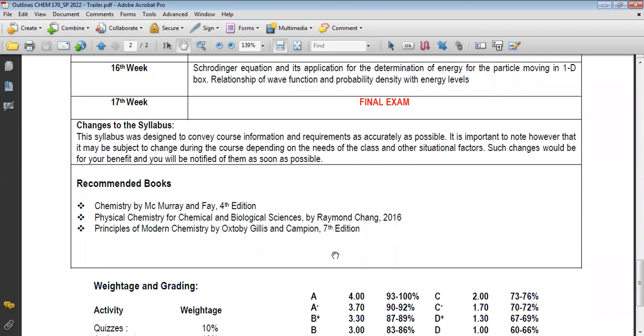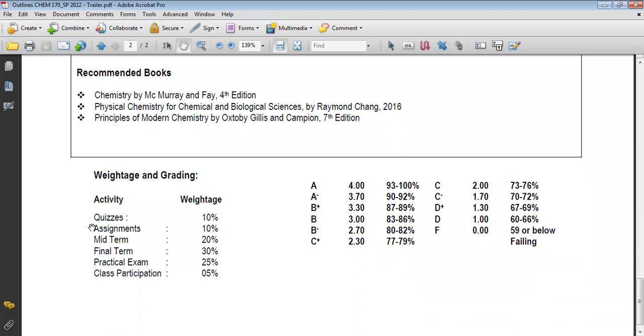Some books are mentioned here. I will give you the soft copy. The weightage of your assessment is given here: quizzes will be 10%, assignments will be 10%, midterm is 20%, final term is 30%, and your practical exam will be 25%, and your class participation is 5%.